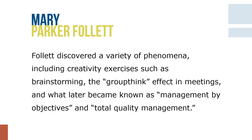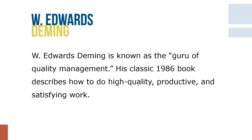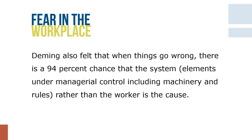W. Edwards Deming is known as the guru of quality management. Deming taught Japanese industrialists statistical process control and quality concepts. His classic 1986 book describes how to do high-quality, productive, and satisfying work. Deming believed that removing fear from the workplace gives employees pride in their workmanship and increases productivity. Deming also felt that when things go wrong, there is a 94% chance that the system — elements under management control including machinery and rules — rather than the worker, is the cause. He believed that making changes in response to normal variations was unwise, and that proper understanding of variation includes the mathematical certainty that variation will normally occur within a certain range.